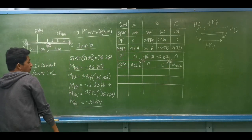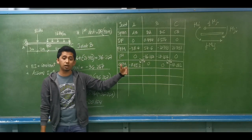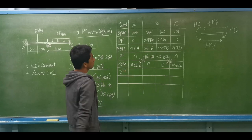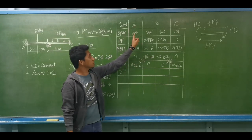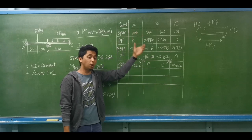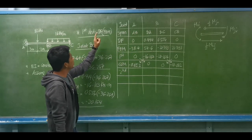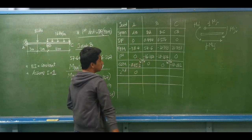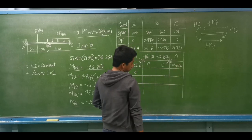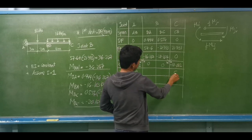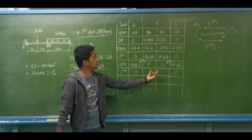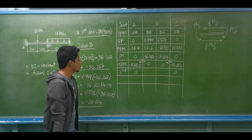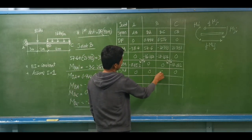For the second distribution, at joint A (0 × carry-over = 0) and at joint C (0 × negative 10.082 = 0). At joint B, there is no remaining unbalanced moment, so the distribution is 0. We can now proceed to compute the final moments.